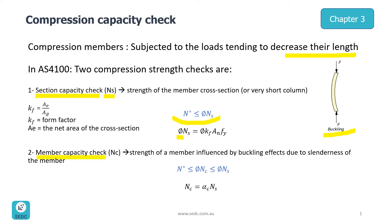You can see that in the next few slides. As you can see, φNS = φKF·AN·FY. KF is form factor, AN is net area of cross section, and FY is yield stress. You can see in our practical example how we can get each one of these factors.